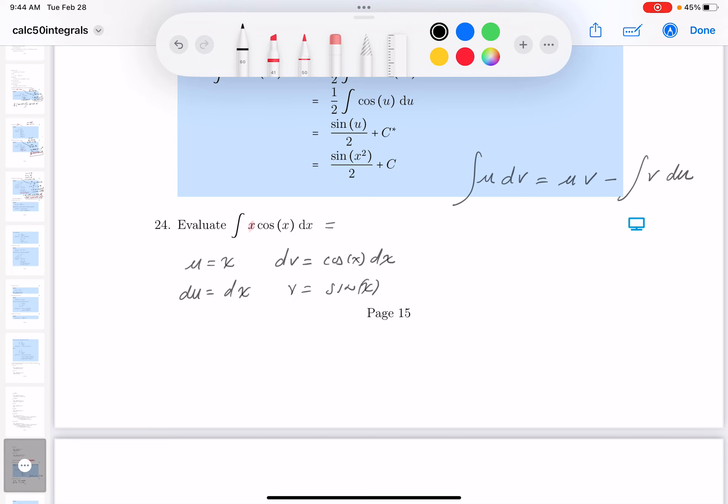All right, let's write this down over here. And what am I going to put down? I'm going to put down the u, v now, which is going to be x sine x. Minus, let's see, v, that's going to be sine x, times a du, which is going to be dx.